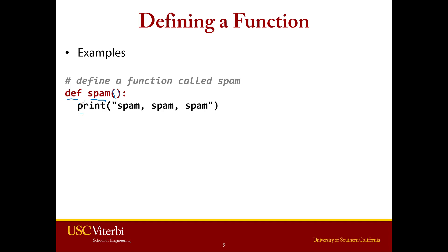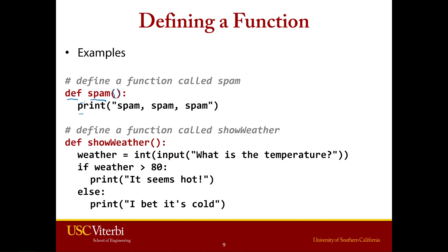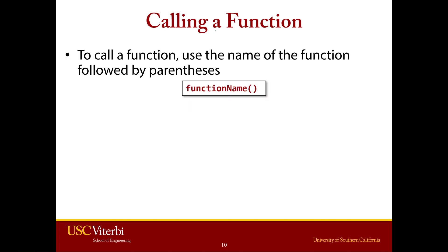Let's think about a slightly more interesting version. Here's a function called showWeather. What does it do? It's going to create a variable called weather, ask the user what the temperature is, and then do an operation where if the weather is greater than 80, it prints out a certain message, otherwise it prints out a different message. You can imagine this could be a simple function that you could reuse anywhere in your code. Now this is simply the definition. So now let's look at what it looks like to use the function — you simply say the name of the function with open and close parentheses. That's it.